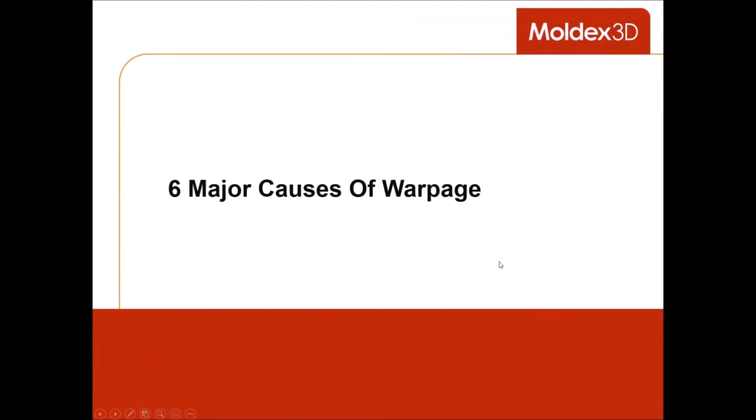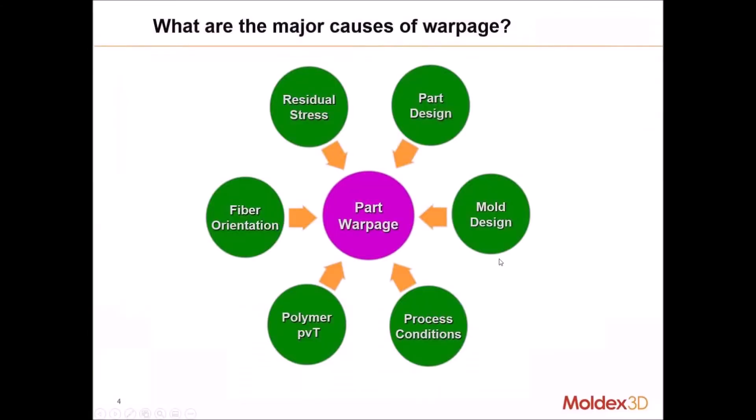We're going to start with the six major causes of warpage. What are they? Part design, mold design, process conditions. You probably already saw these on the agenda screen, but polymer PVT, fiber orientation, and residual stress. So all six of these are going to contribute to the anisotropic effect of shrinkage on the part.